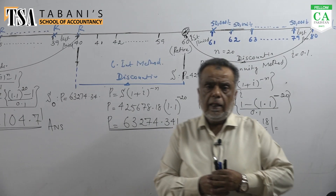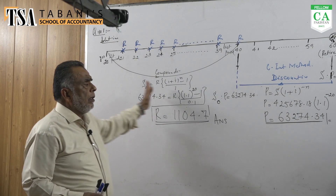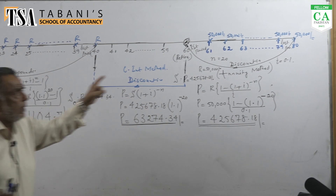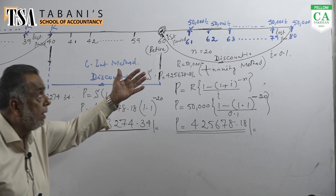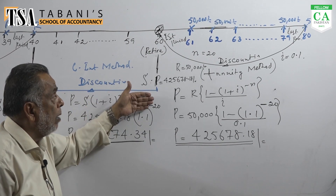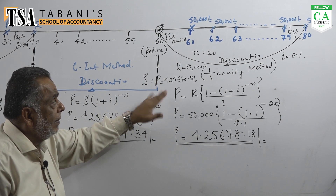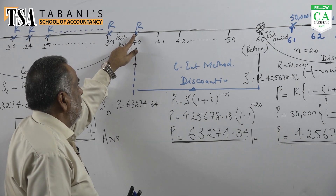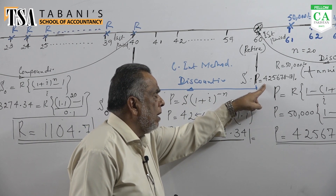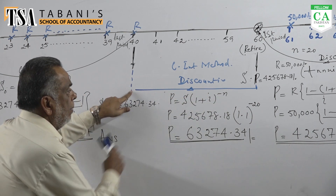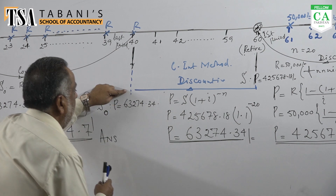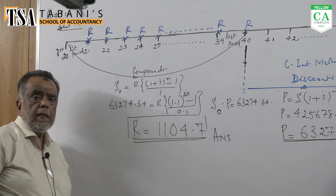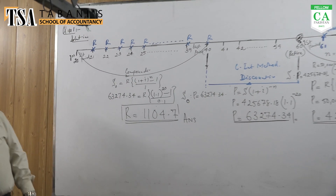Watch it very carefully — recap. Mr. Ahmed from age 20 to 40 accumulates an amount. I applied discounting on the ordinary annuity to get P, which came out to that value. Then I further discounted that P back using compound interest since he is saving from age 20 to 40. That P then became S for the saving annuity, and the ordinary annuity compounding process gave us R equals 21,104.7. That's the first question done. Let's go to the second question.